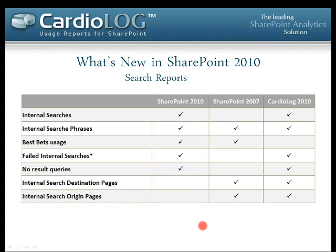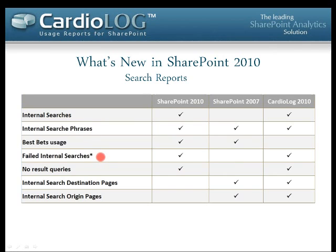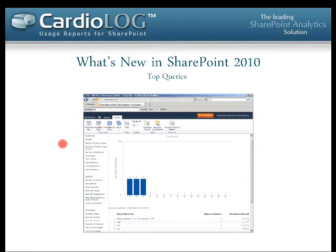The next report group is named search reports. Some of them already exist in MOSS, and some new ones have been added. The new ones include the number of internal searches, the number of failed internal searches, and no-result queries. Cardiolog does not currently provide information about best bets.